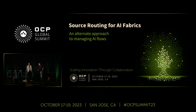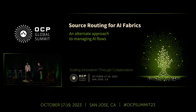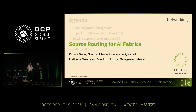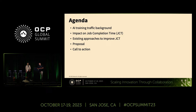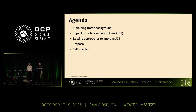Today we're going to present an alternate approach to managing flows in an AI cluster. When we say alternate, we're not saying better, we're just saying different. We'll give you a brief introduction to the AI training traffic background, the fabrics and stuff that David has probably already mentioned, the impact of job completion time especially when it comes to congestion, other latency dynamics within the fabric, some existing approaches to improve JCT, as well as our proposal and our call to action.